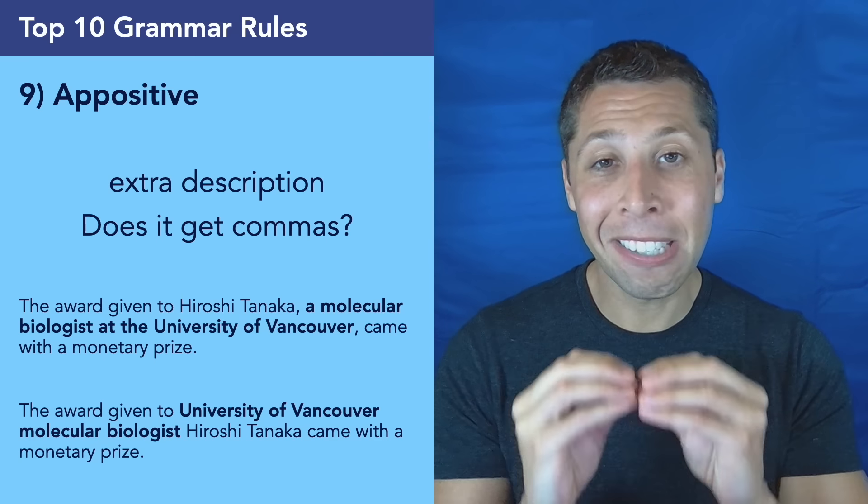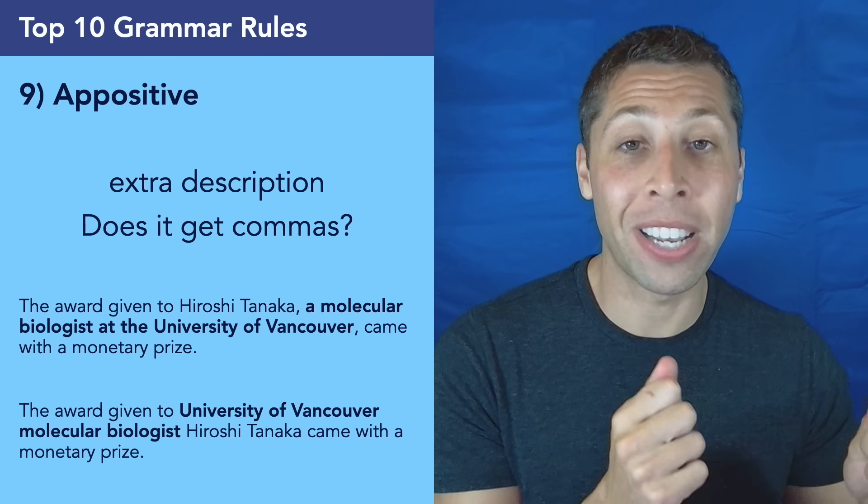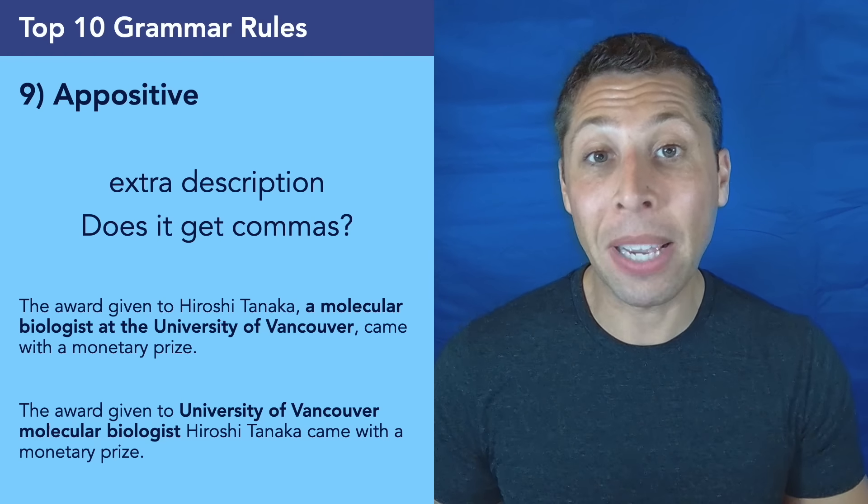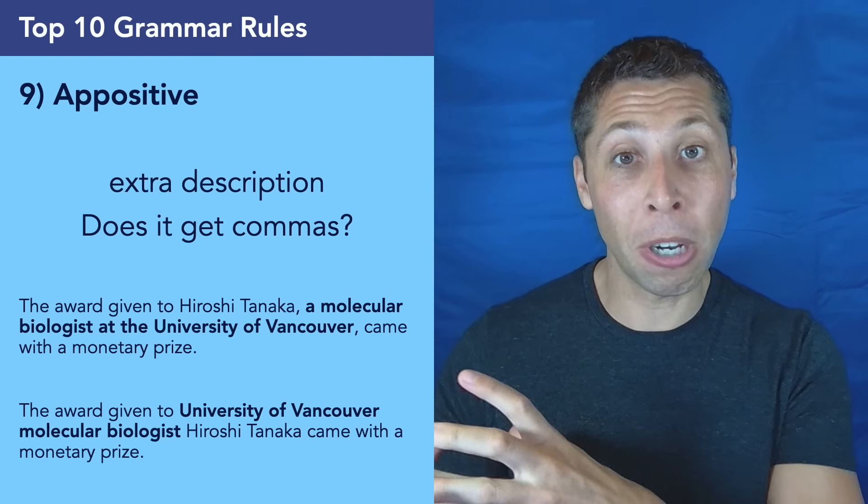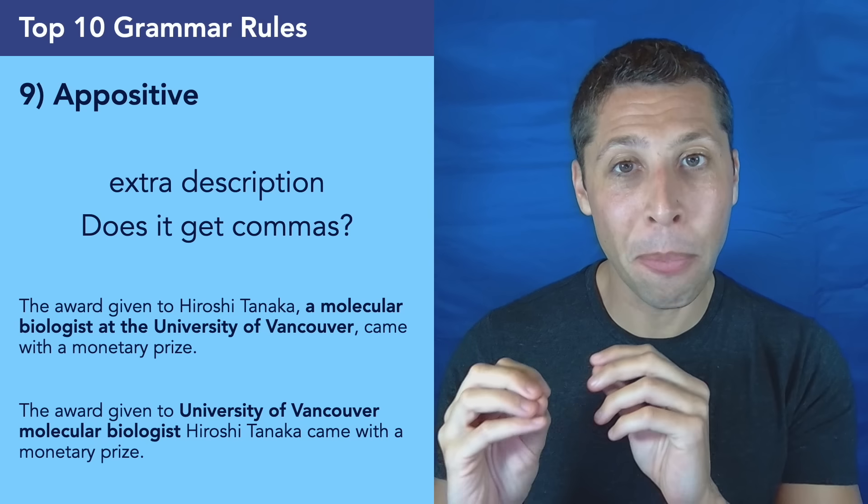Now, when the main specific name comes first, we usually add the extra information afterwards using two commas. But when the main specific name comes second, the extra description can kind of just flow into it without any commas. So that's the difference between the top and the bottom. In the top one, the specific name is first, so we use two commas to add the description after it.